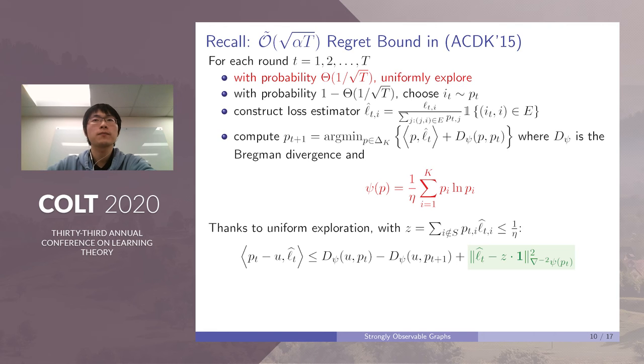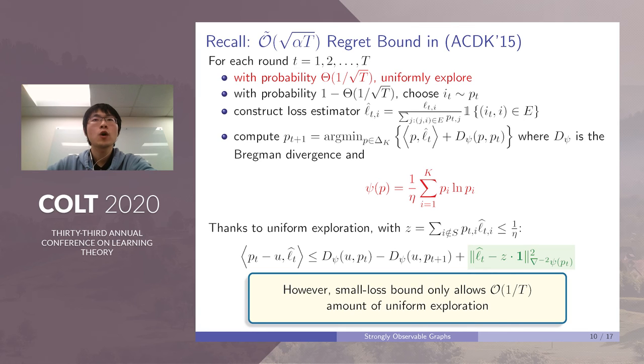By standard OMD analysis, we have the following inequality. The green term is often called the local norm or shifted local norm. We want to point out that the θ = 1/√T uniform exploration is crucial to this algorithm. Otherwise, the scale of z could be prohibitively large, such that the inequality will never hold.